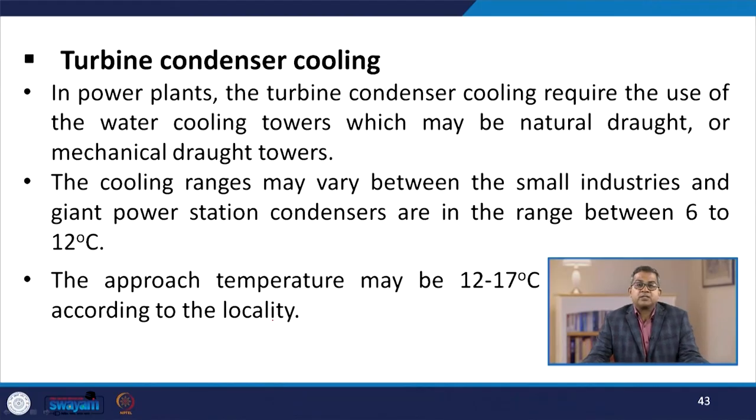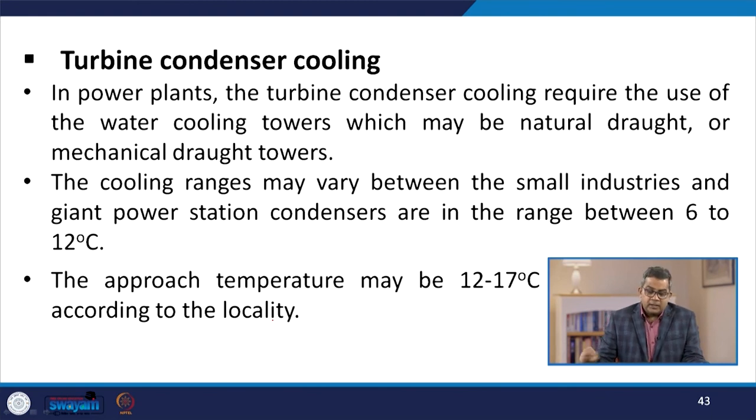For turbine condenser cooling in power plants, water cooling towers — either natural draught or mechanical draught — are required. The cooling range may vary between small industries and giant power station condensers, ranging from 6 to 12 degrees Celsius. The approach temperature may be 12 to 17 degrees Celsius according to the locality.